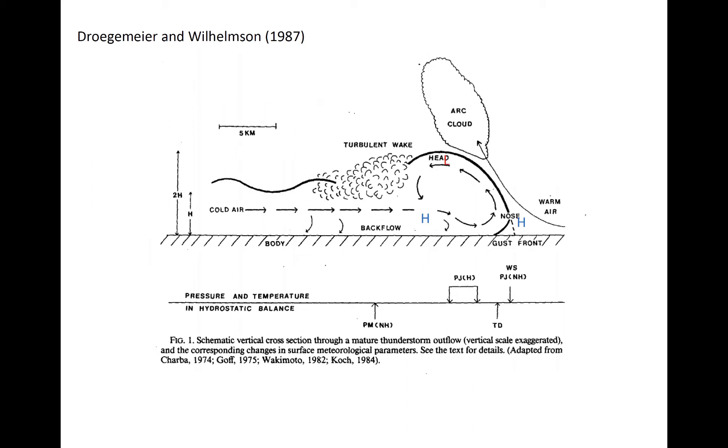Cold pools also frequently occur outside of MCSs. They can form as low theta-E air accompanying downdrafts in isolated convection propagate outward within the boundary layer from where the downdraft encounters the surface. Convergence at the leading edge, or nose, of the cold pool forces upward motion here, which if strong enough can reach the LCL and form an arc cloud, and possibly even deeper cumulonimbus clouds.